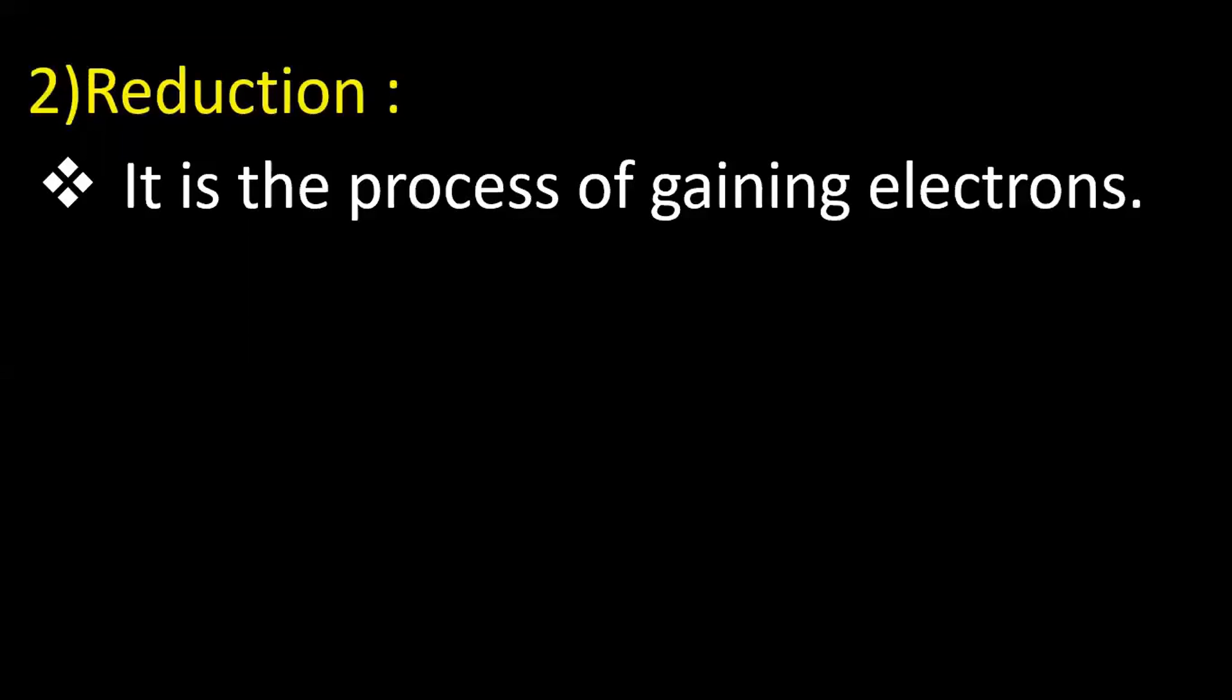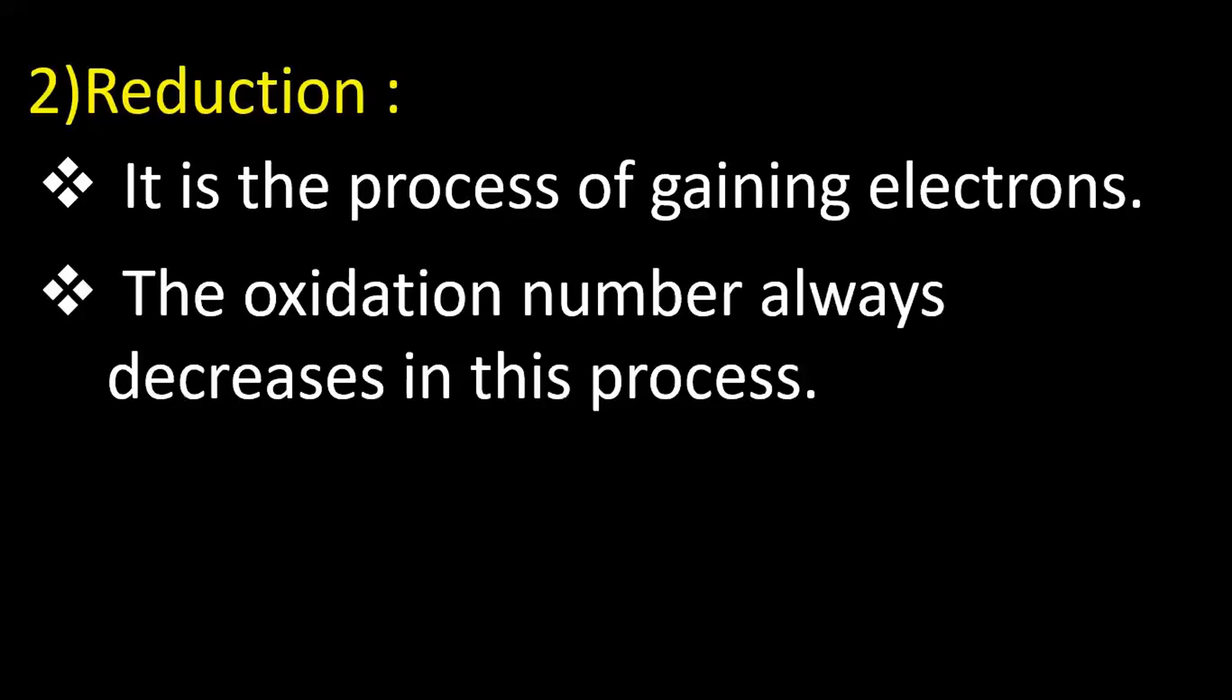The next one is reduction. It is the process of gaining electrons. The oxidation number always decreases in this process. Example: chlorine 0 means chlorine is neutral. Addition of one electron causes formation of Cl⁻ ion.